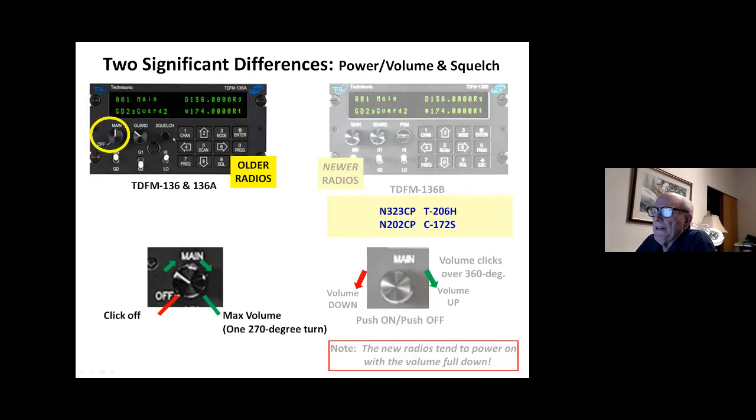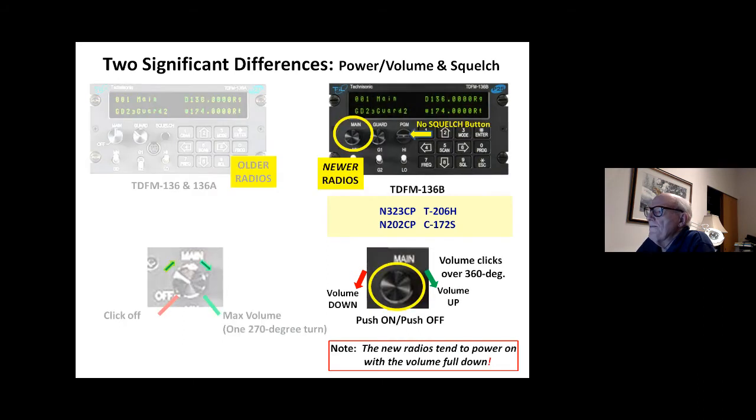Notice there's a squelch button here on the left side on the older model radios. You can push that and open the squelch kind of like you do on a nav radio to hear the identifier and positively identify the nav aid. They've eliminated the squelch button on the B model. There's no squelch button, which is unfortunate in the B model radio, because that was a really handy feature to be able to do a volume check. So what you need to do is listen to another station respond to you to do the radio check in the 206 and the 172.